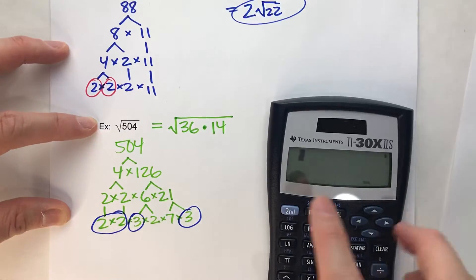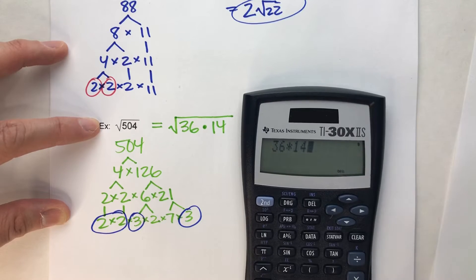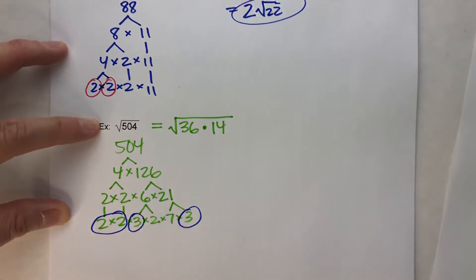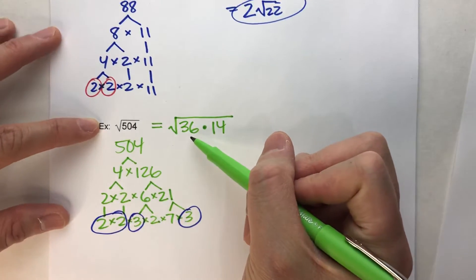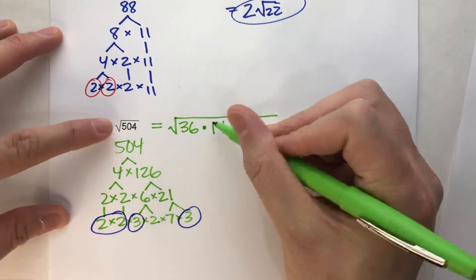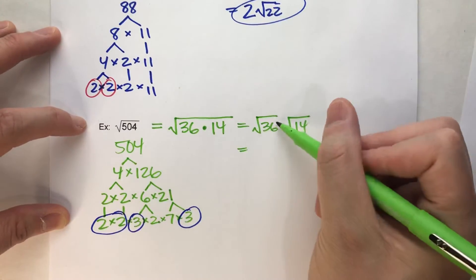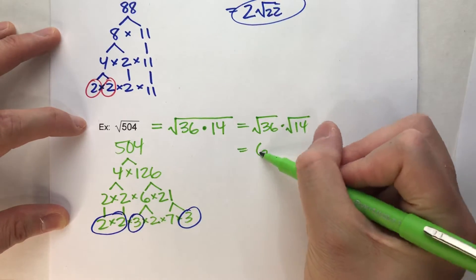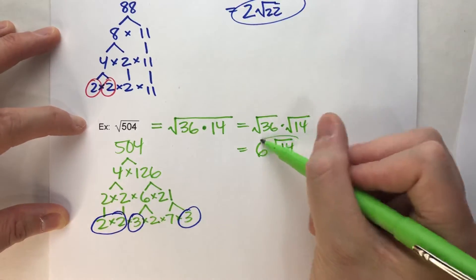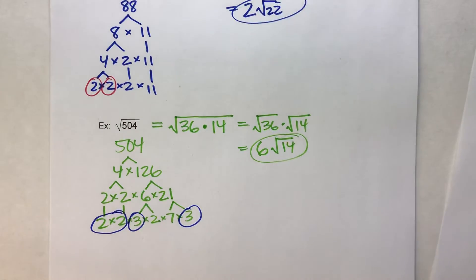If you're not sure, you can always double check it — 36 times 14 should be 504, and there it is. So we've broken down 504, and 36 is the biggest perfect square. Which means I can rewrite this as the square root of 36 times the square root of 14. The square root of 36 is a whole number: 6. Then the square root of 14 just tacks on at the end. So 6 root 14 is the simplified version of the square root of 504.